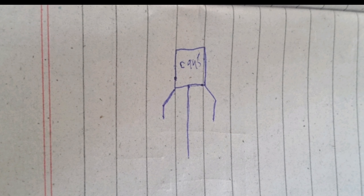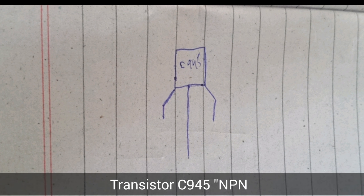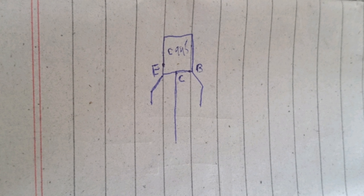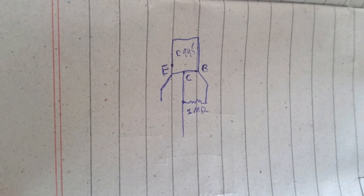Friends, look at this. I have used a C945 transistor and made a diagram. The right side is our base, the middle side is our collector, and the last one is our emitter. First of all, from the base we have to put a 1 mega ohm resistance.